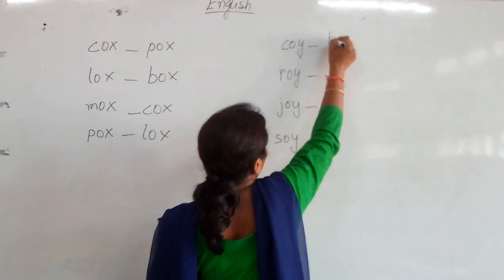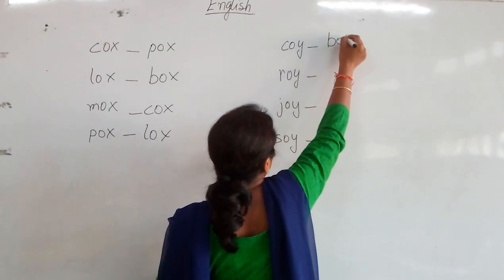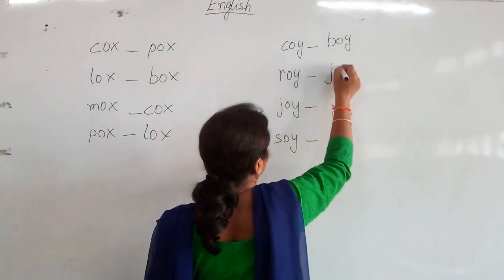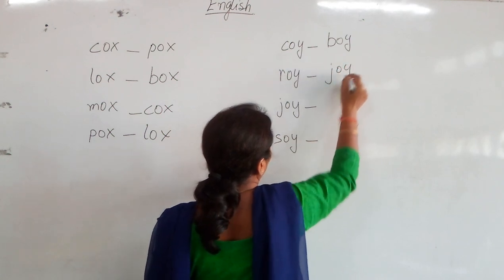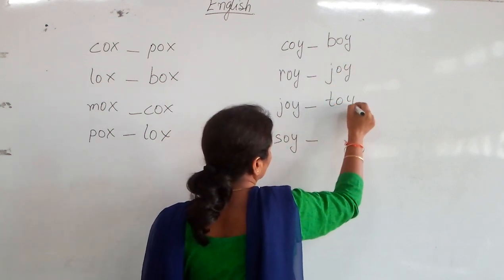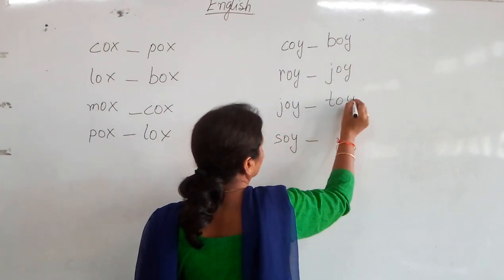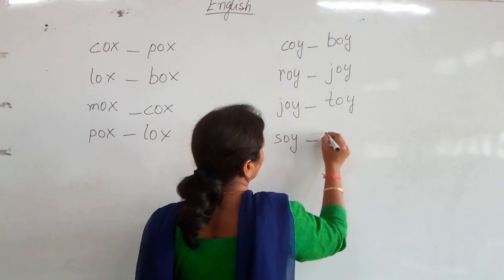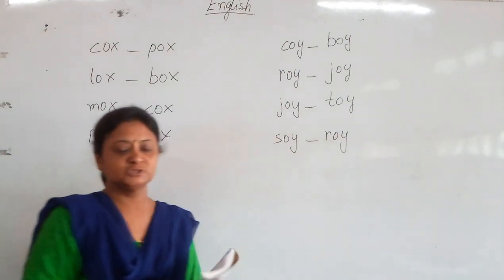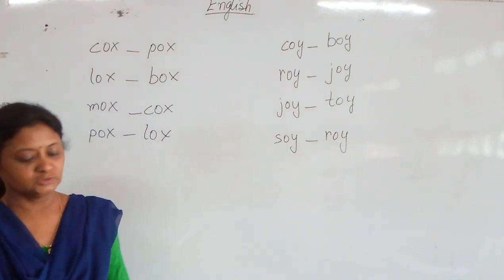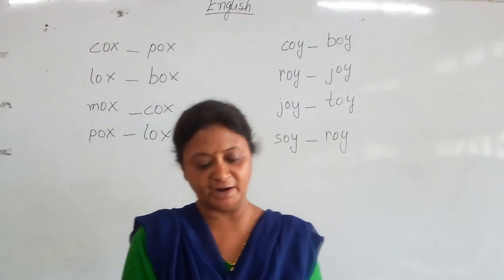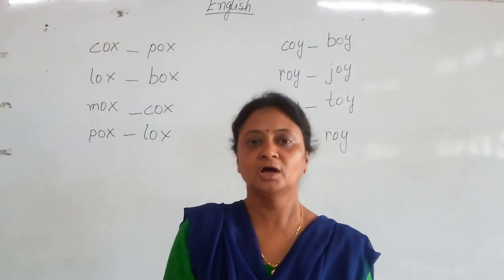Now come to OY. You can write Boy, Roy, Joy, Toy, Soy, Roy. So these are the clusters of OX and OY that we have to write in your old book.